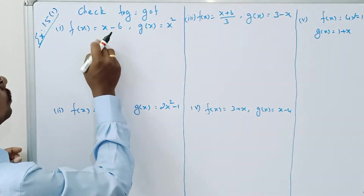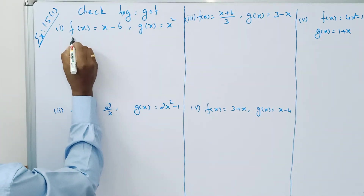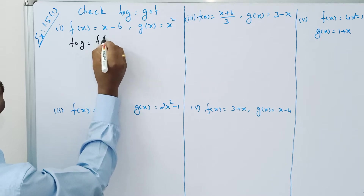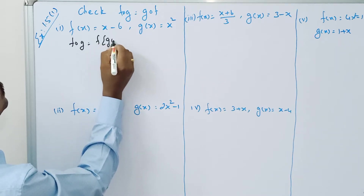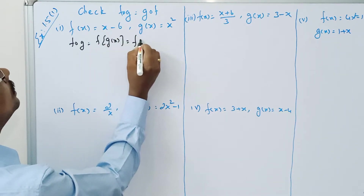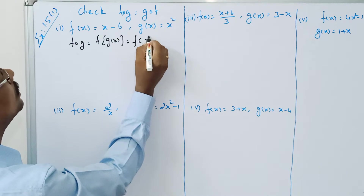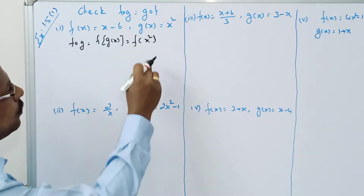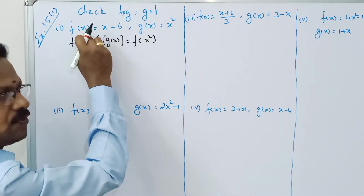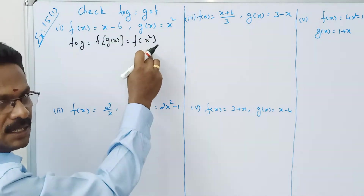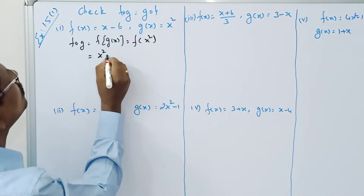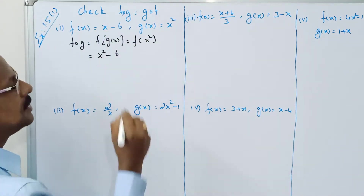F composition G — that is F of G of X — is equal to F of X squared, which is equal to X squared minus 6.